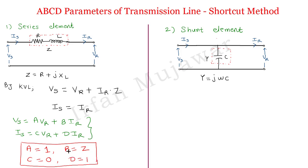These are also the ABCD parameters of a short transmission line, because in a short transmission line we consider only the series element — shunt elements are assumed to be zero or absent.